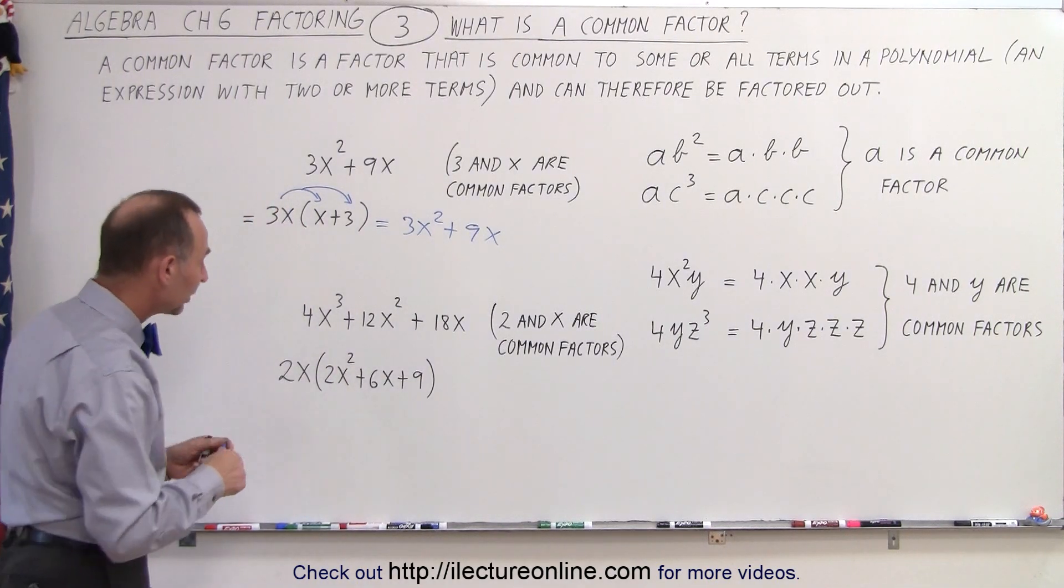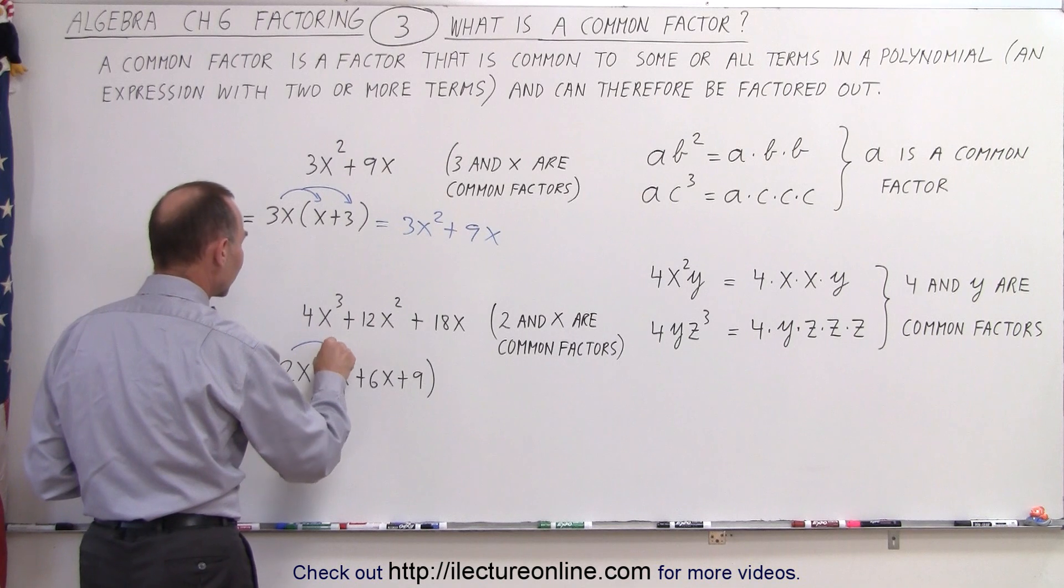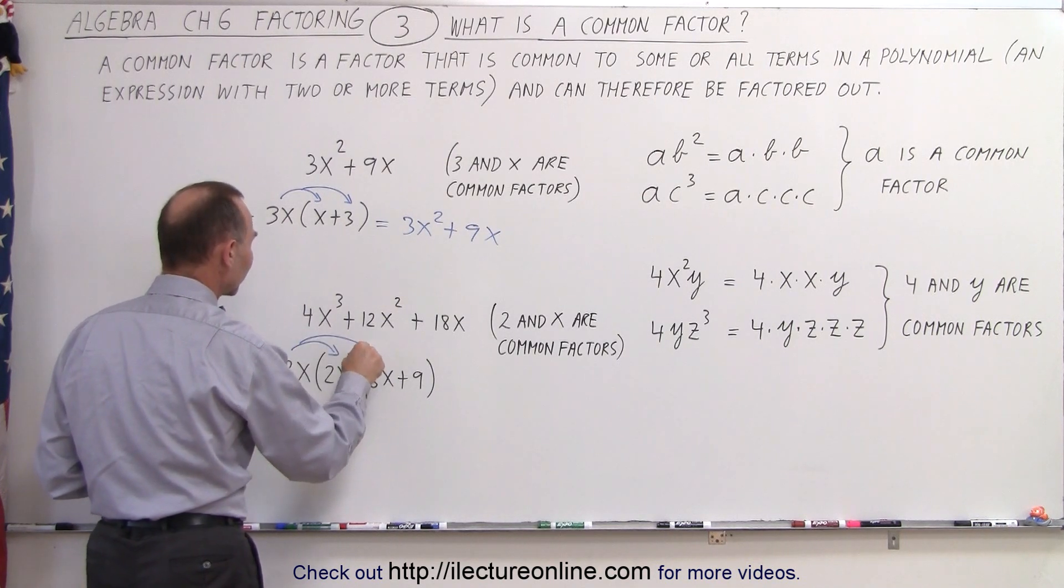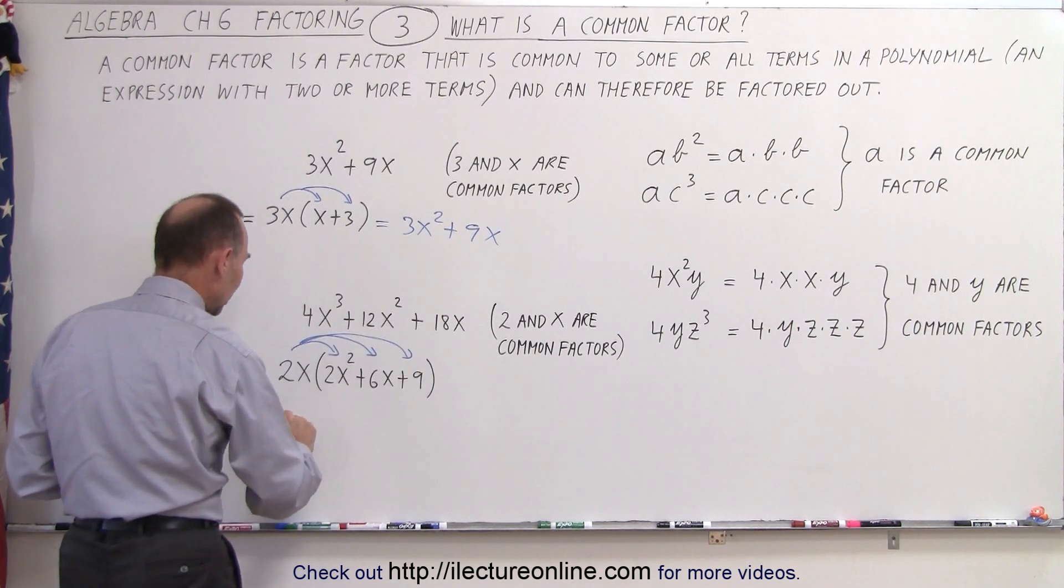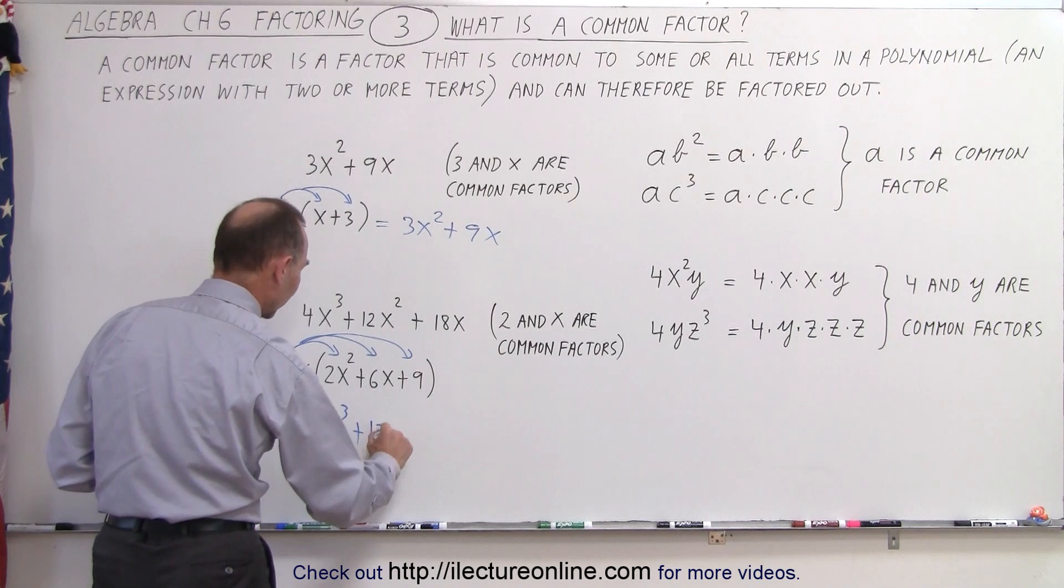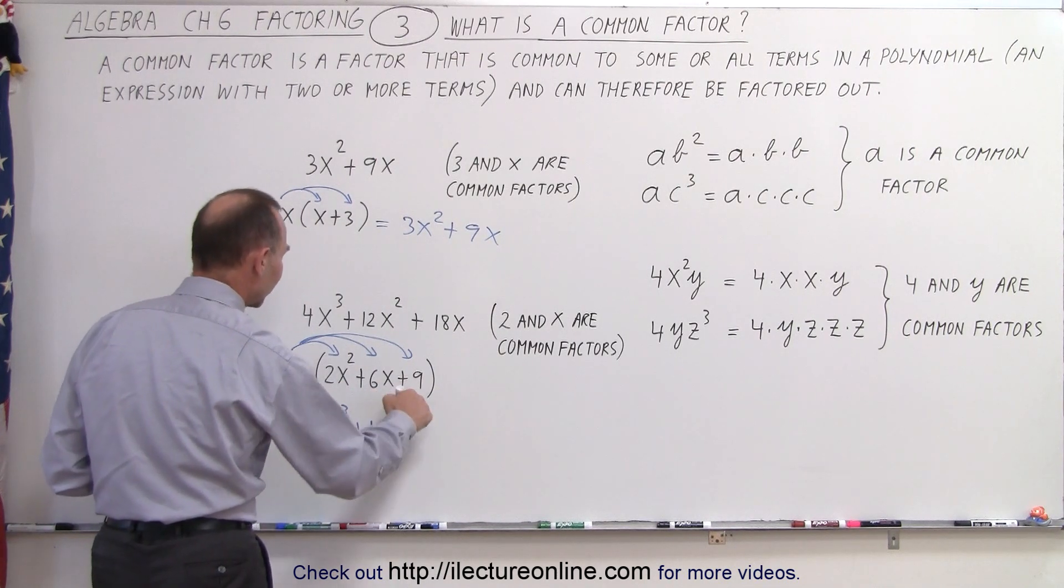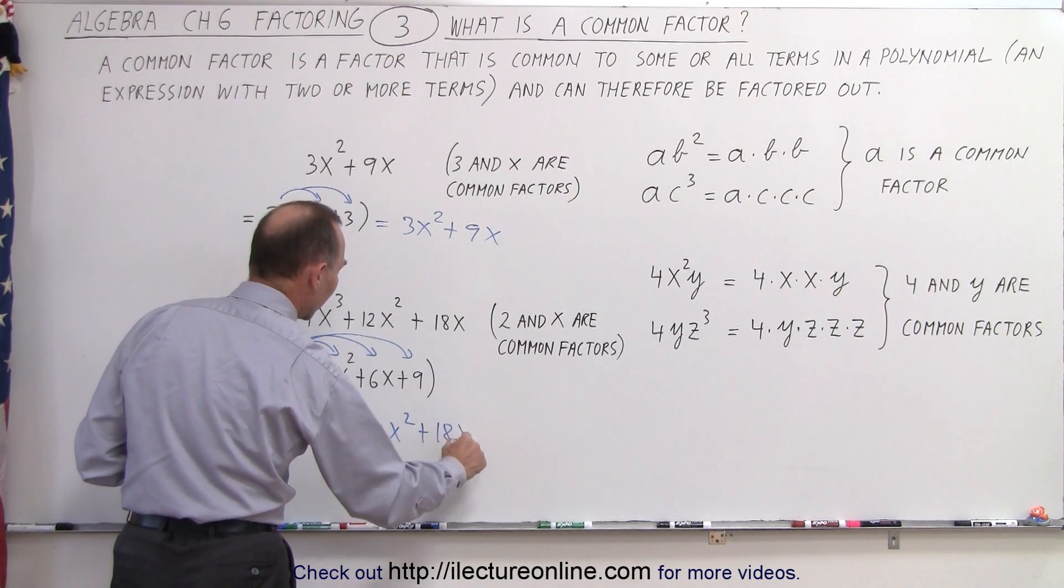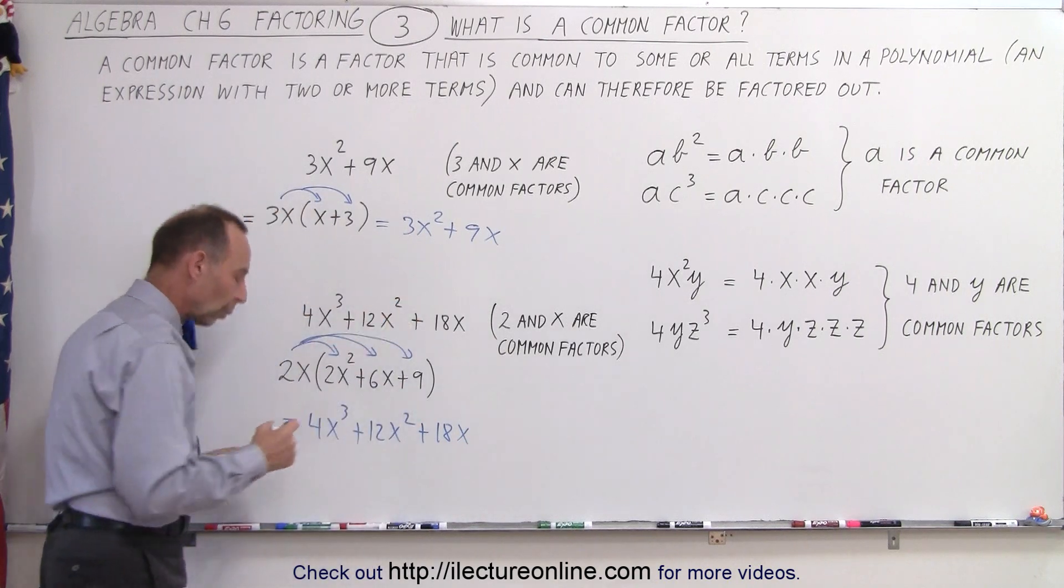Again, to make sure we did it correctly, we multiply 2x times 2x², 2x times 6x, and 2x times 9. If we do that, we get 4x³ plus 2x times 6x, which is 12x², and 2x times 9, which is plus 18x. And look again, we get what we started with.